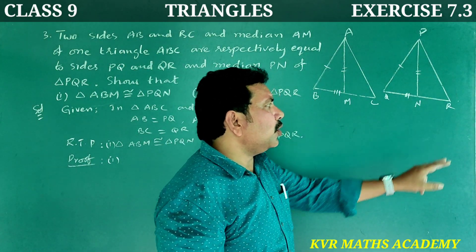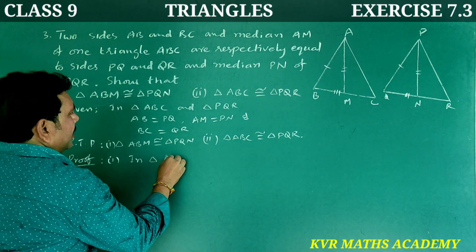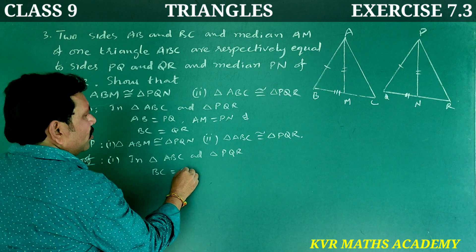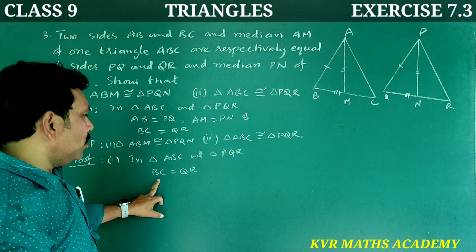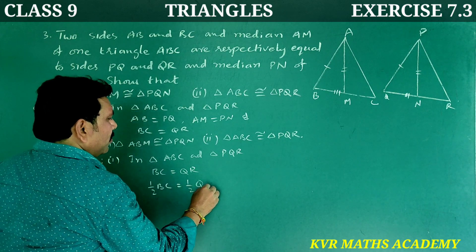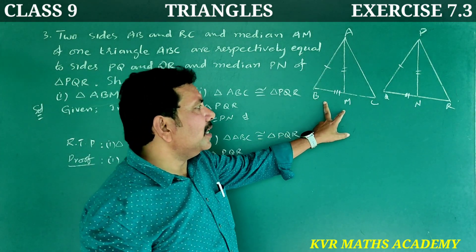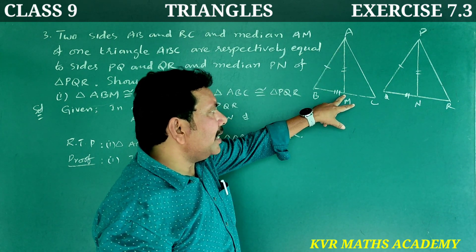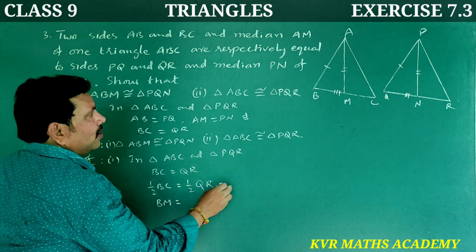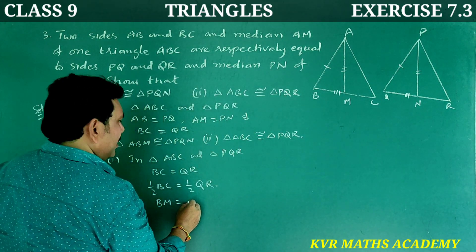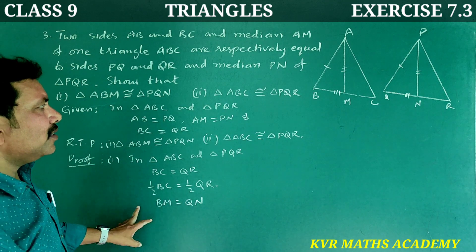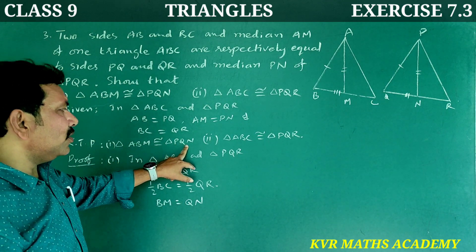Now, BC is equal to QR. Since AM is the median, it divides BC into two equal halves, so BM is equal to half of BC. Similarly, PN is the median, so QN is equal to half of QR. Therefore BM is equal to QN.